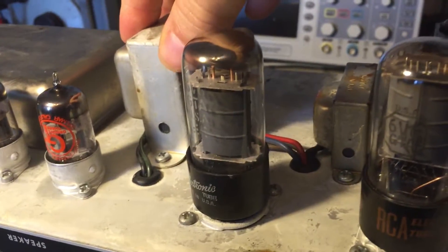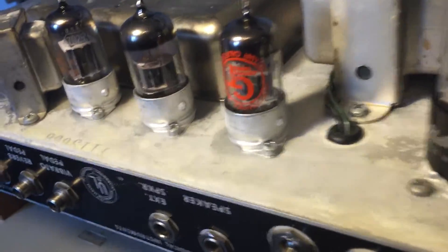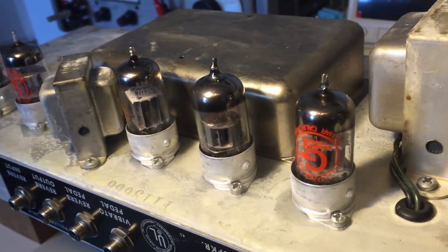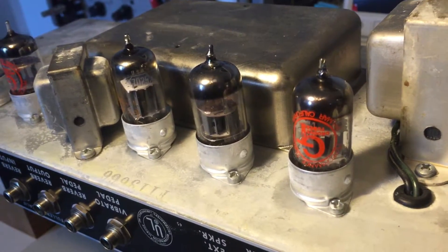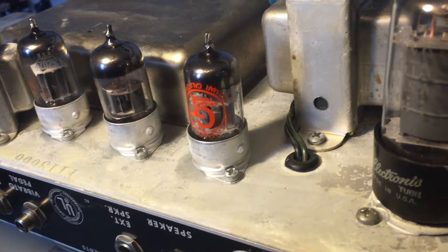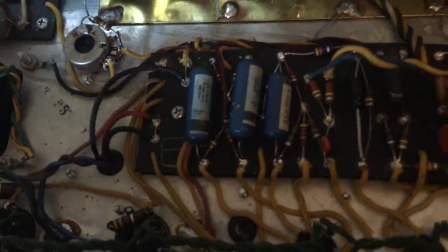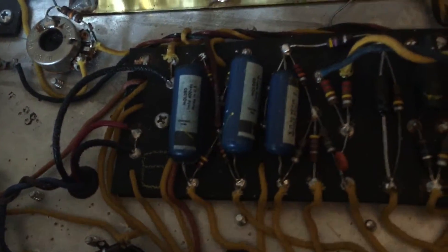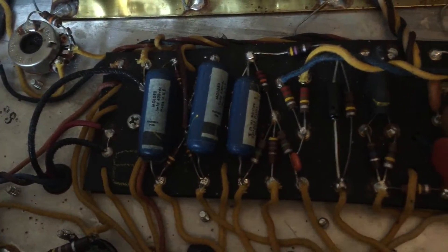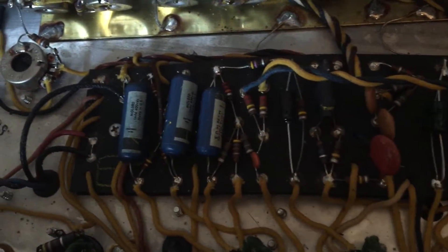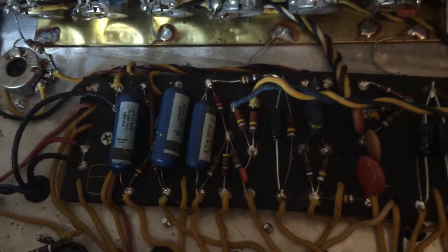The 6V6 problem is solved. Now we're going to tighten this bad boy down, we're going to check the capacitors on the bottom, and we should be all ready waiting for the resistors to arrive to finish up this amplifier and test it out.